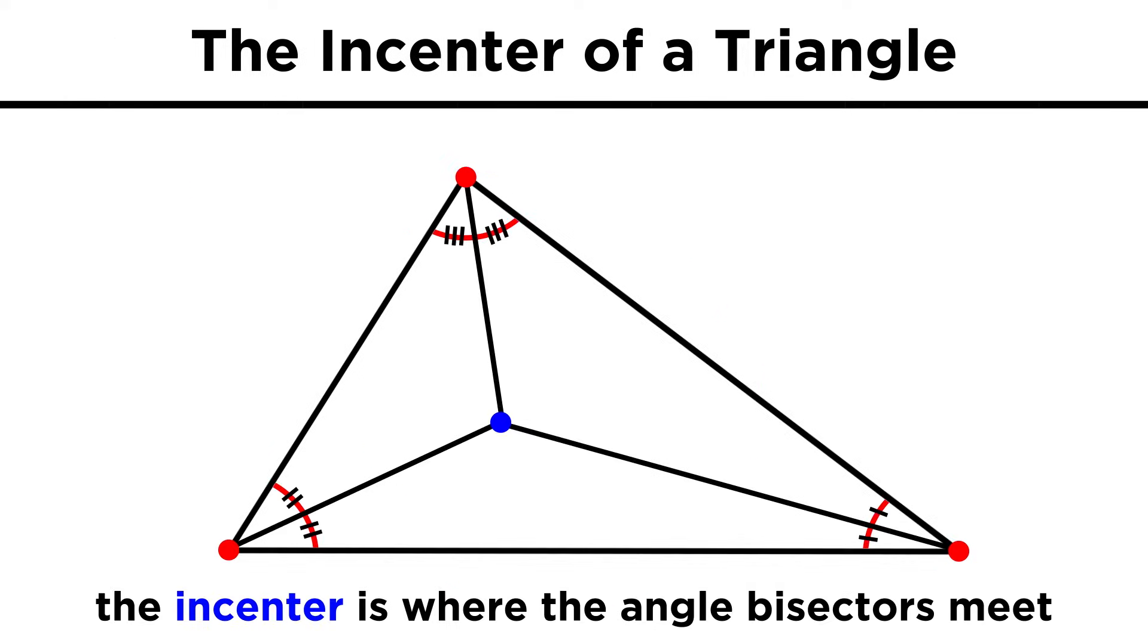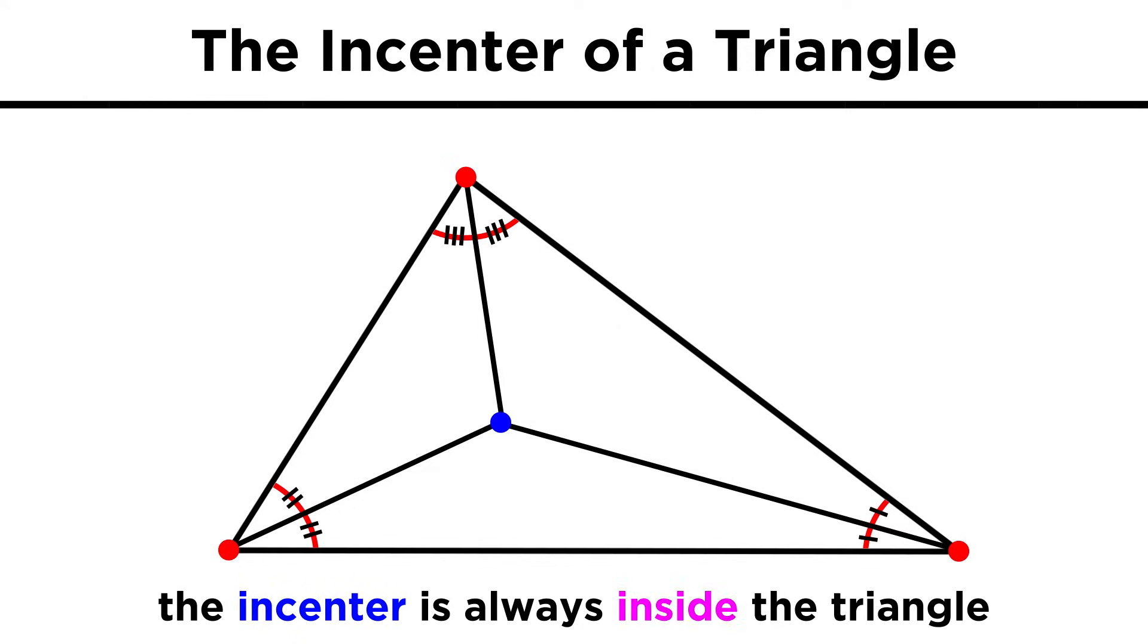We can also discuss what happens if we bisect all the angles of a triangle. These angle bisectors will meet somewhere called the in-center of the triangle, and unlike the circumcenter, the in-center will always be inside the triangle.